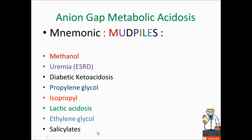Just think about aspirin — it has the property of causing a mixed acid-base disorder: respiratory alkalosis plus metabolic acidosis. Aspirin produces lactic acid and ketoacid. What's important to remember is that aspirin leads to metabolic acidosis.